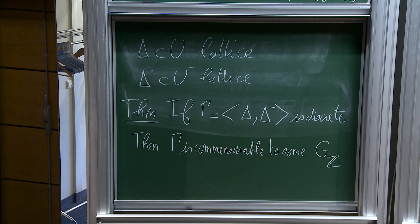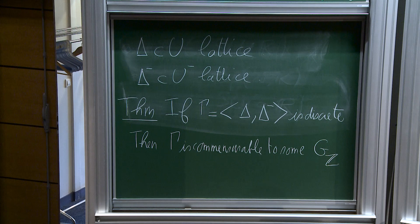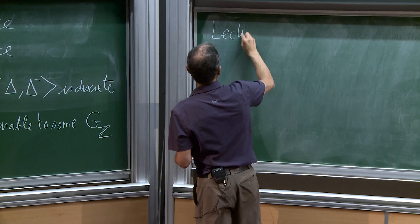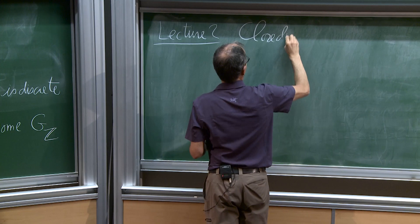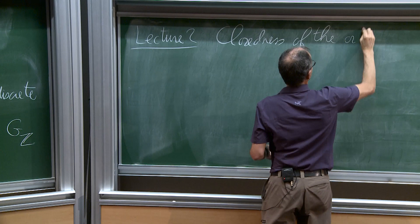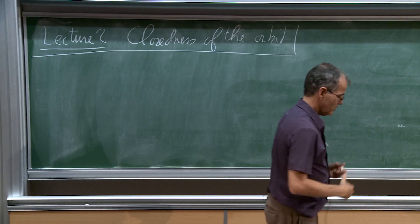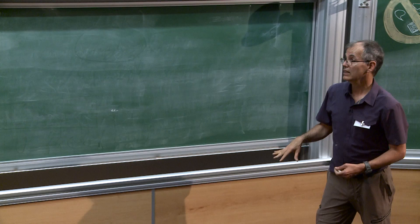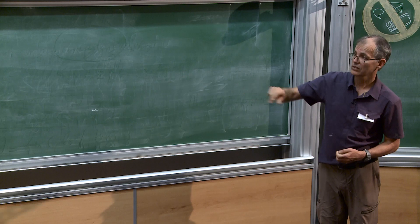The conclusion is that Γ is commensurable to some G_ℤ for some ℚ-form of G. This is what I plan to prove. I give a name to this second lecture: the closeness of the orbit. I will not prove the full theorem today — I will just prove that some orbit is closed. Tomorrow I will explain how the fact that the orbit is closed implies that Γ is arithmetic.